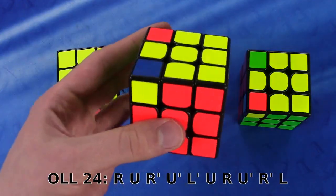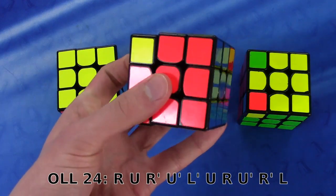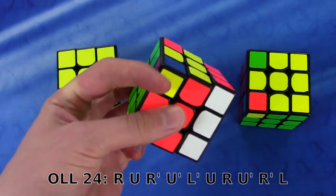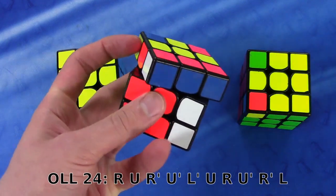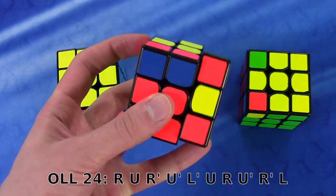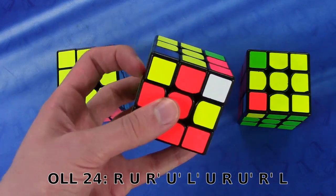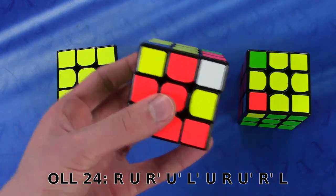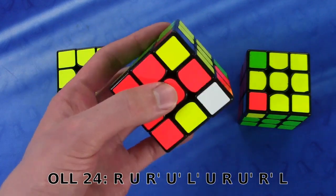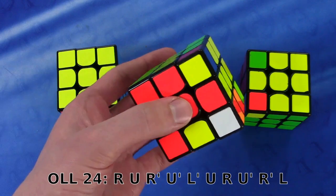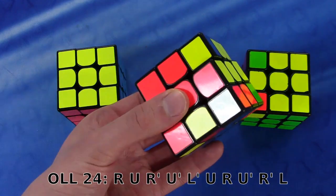To finger trick this alg I just start off here doing sexy moves so I'm just going to do the R very simply and then the U with my index finger from the front. Now my pinky here is ready for the R'. U' here and this is where it gets a little bit more complicated so the next move is an L'. To do that I'm going to do a half a Z rotation and then I'm going to use my index finger to do this.